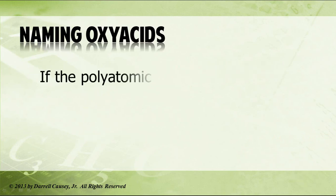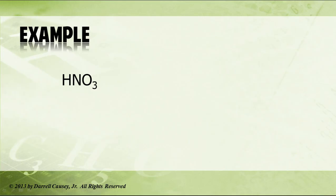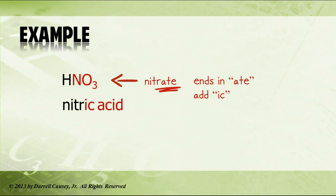Naming oxyacids: if the polyatomic ion ends in -ate, use the root of the third element and add -ic and acid. For example, HNO3 — NO3 is our polyatomic ion, and it is nitrate. So it ends in -ate, so we add -ic, and that gives us nitric acid.